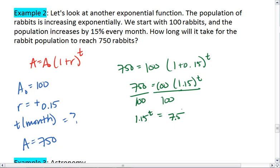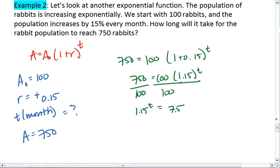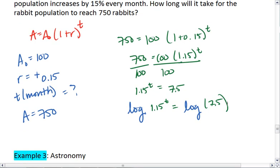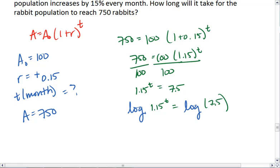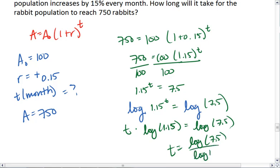Now to solve for t, I want to bring that exponent down. So what I want to do is take the log of both sides. Take the log of 1.15 to t, and honestly you can use the natural log too if you want to, equals the log of 7.5. Thus I end up with t times the log of 1.15 equals the log of 7.5. t equals the log of 7.5 over the log of 1.15.